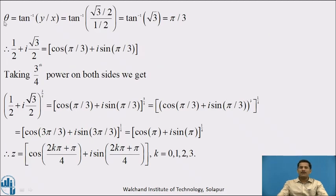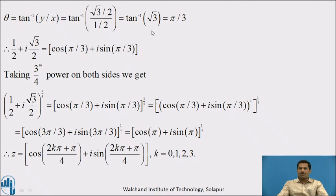Next, calculating θ: θ = tan⁻¹(y/x) = tan⁻¹((√3/2) ÷ (1/2)). The 2s cancel, giving tan⁻¹(√3), and we know tan⁻¹(√3) = π/3. Therefore, we can write the complex number 1/2 + i·√3/2 in polar form as cos(π/3) + i·sin(π/3), since r = 1.